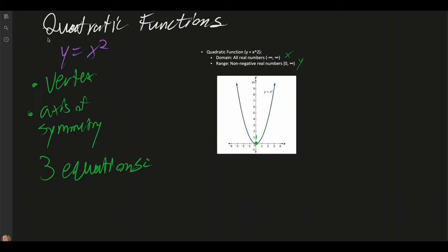Let's go over our quadratic functions. Quadratic functions are typically denoted as y is equal to x squared, where we have our following function with respect to the domain and range. Our domain being the x-axis, our range being the y-axis. The domain is going all the way out far to the left as denoted by negative infinity and all the way out to the right as denoted by positive infinity.